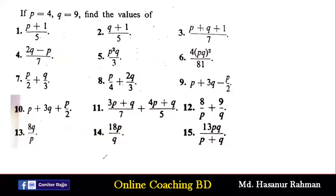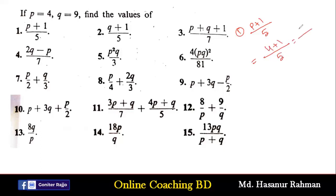Find the value of (p+1)/5. So for number 1, instead of p we put the value: 4 plus 1 by 5. So 4 plus 1 is 5, and 5 by 5 equals 1. That is the answer of number 1.